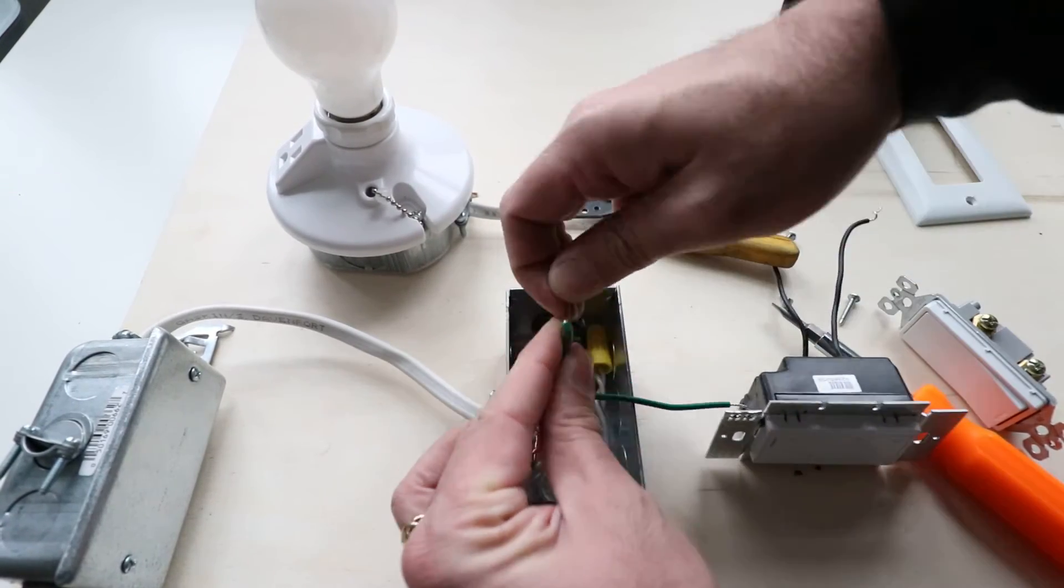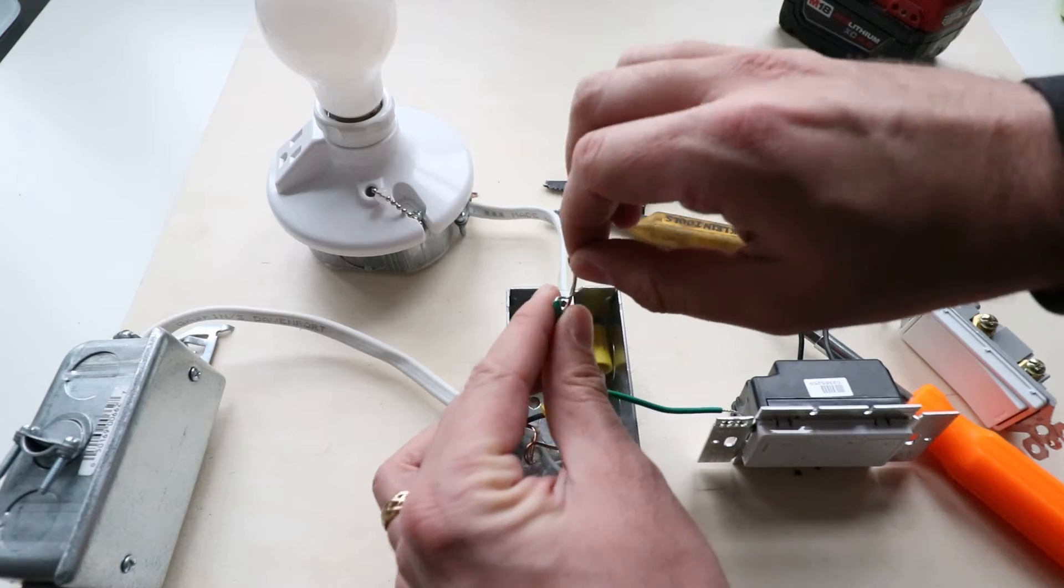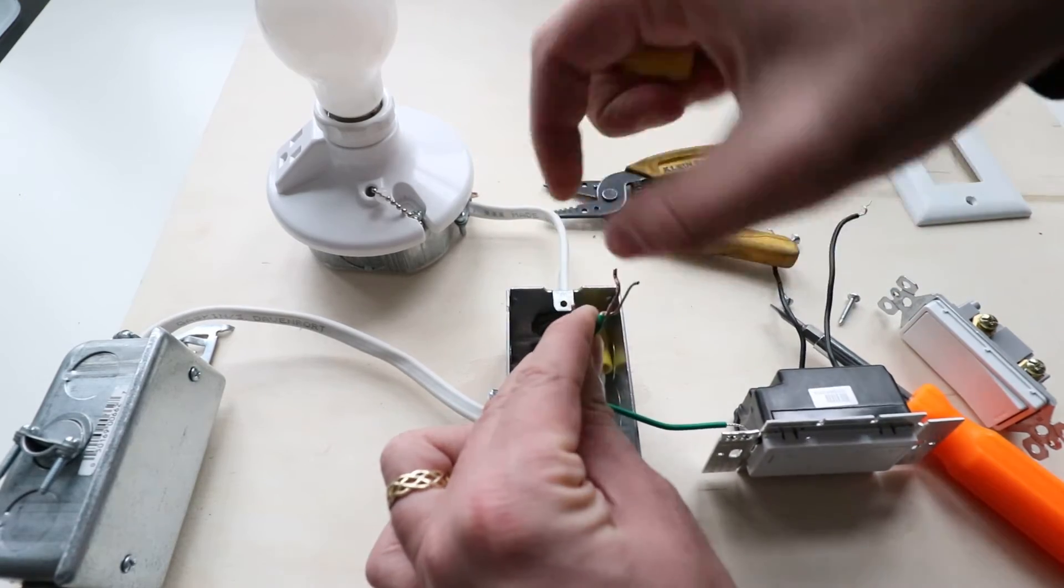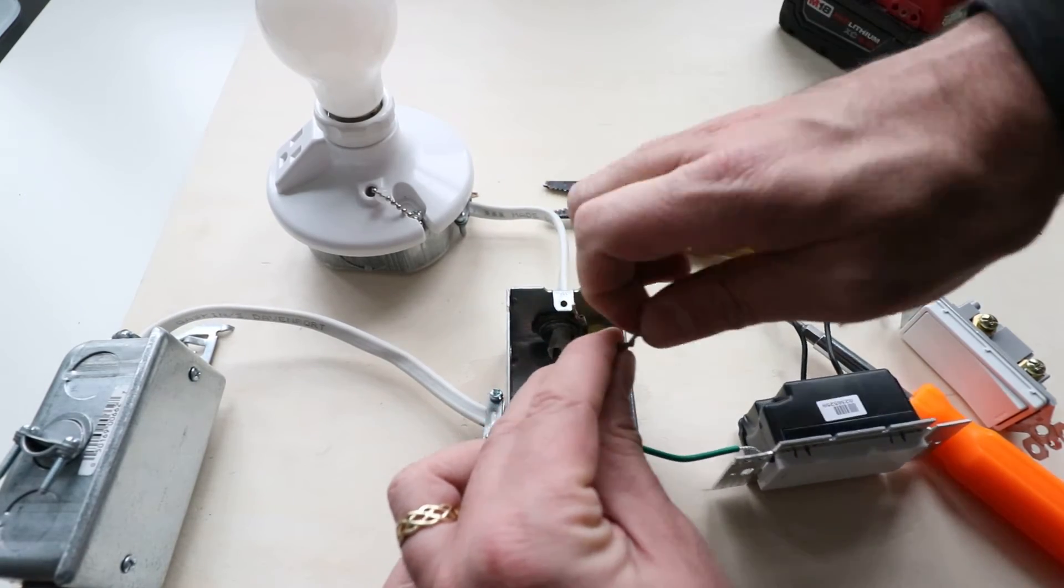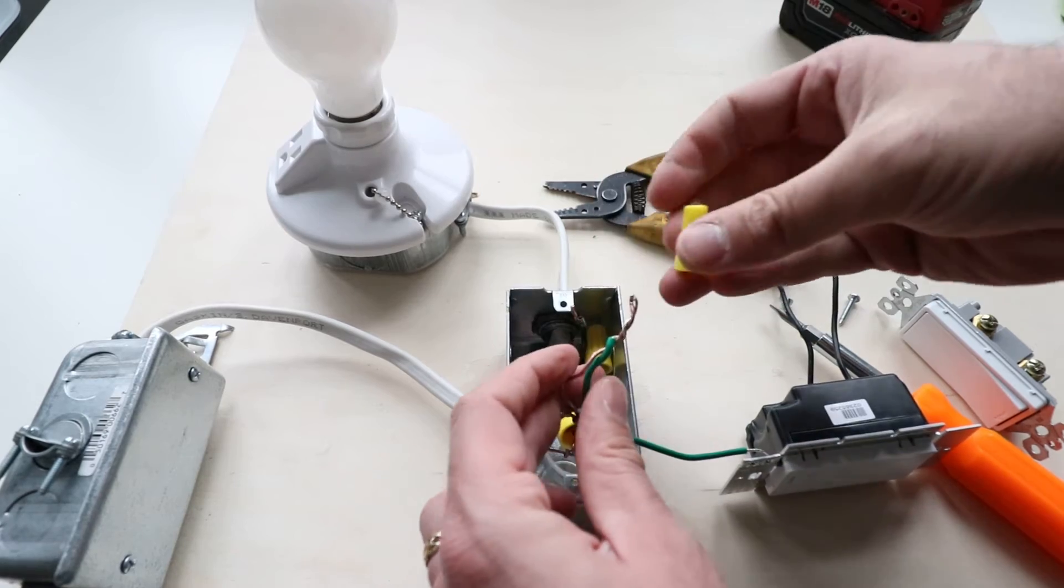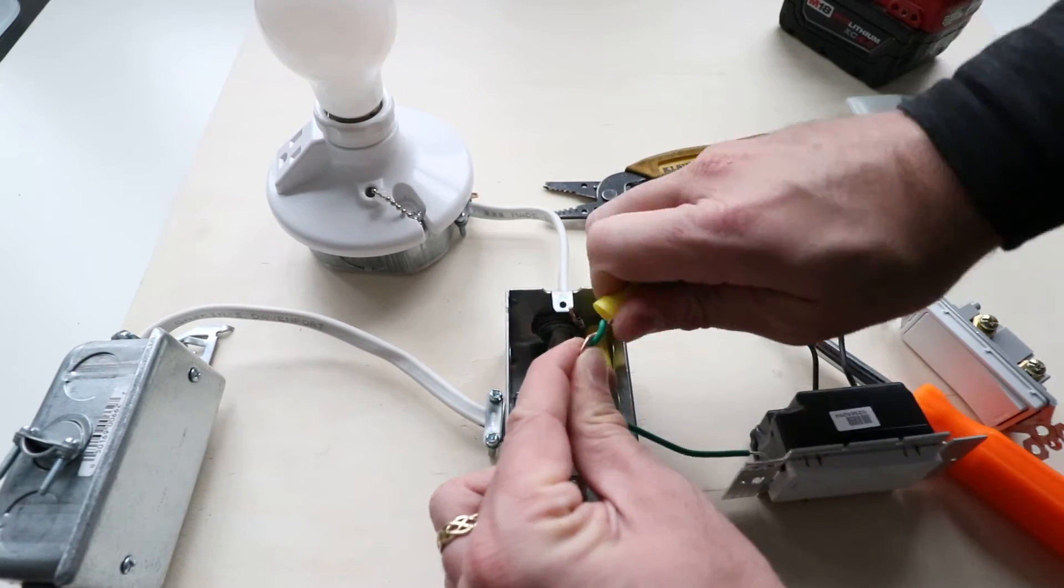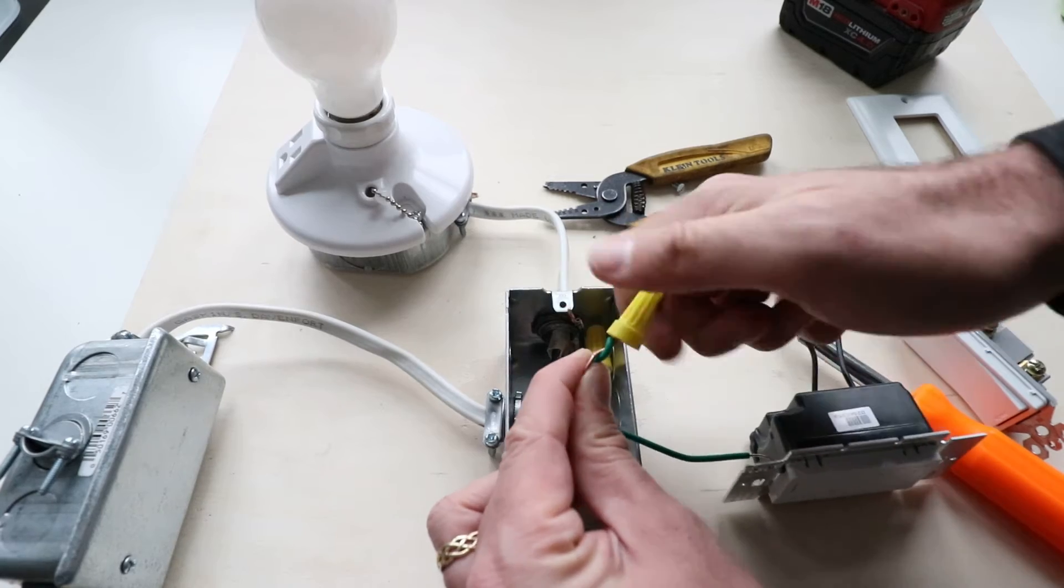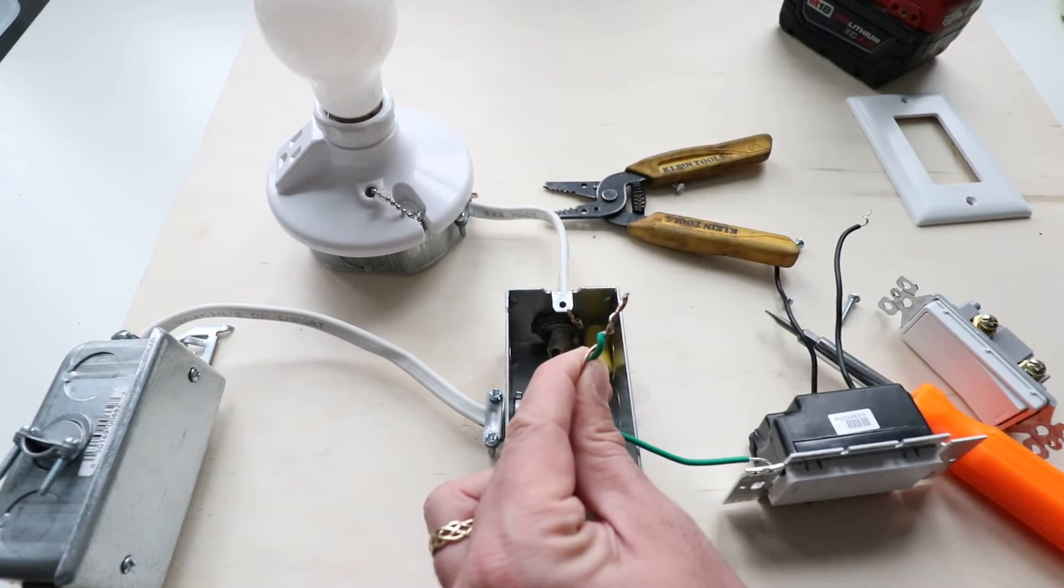We're going to connect the ground wires first. You don't have to, you can do whatever you want. Sometimes it helps to kind of get the wire twisted around and start it a little bit when you're putting it into a wire nut. So I'm going to do that and we'll put the wire nut on there, get that screwed on.